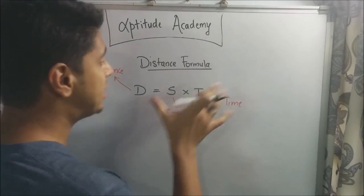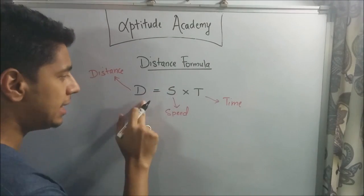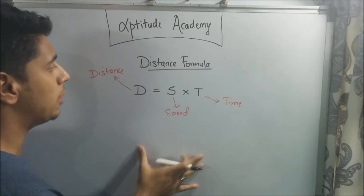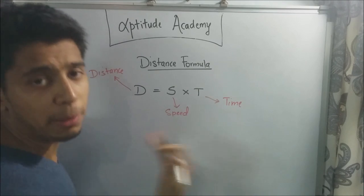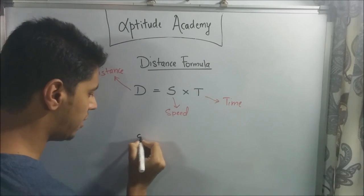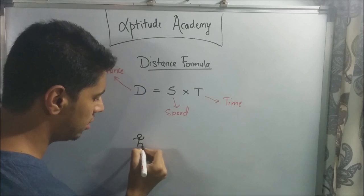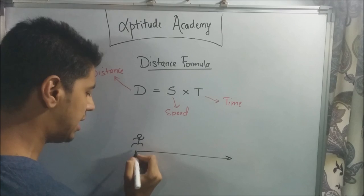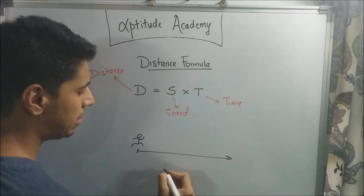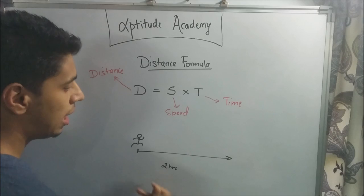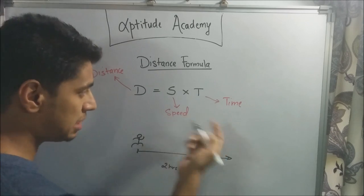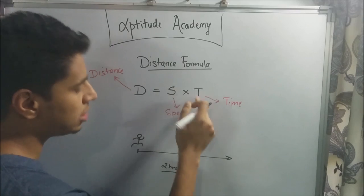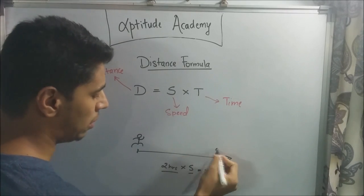For the distance formula, you have D = S × T, where D is distance, S is speed, and T is time. This is a universal formula that applies to anything. Suppose you have a person running on a track — if you tell me he started here and has been running for two hours at a given speed, I just multiply speed and time to find the distance, and hence where he will be found.